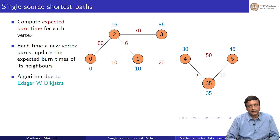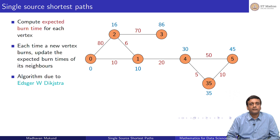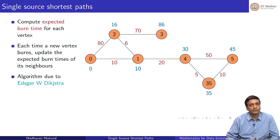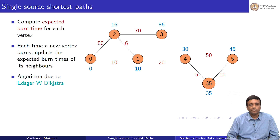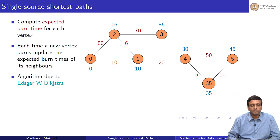This is the algorithm. Although we have described it picturesquely in terms of burning vertices, you can keep track of all this information in a matrix, keep track of what is burnt, keep updating the time to burn by looking at the edges in the graph and finding the neighbors and expected burning times. This algorithm is very well known — it is due to Edgar Dijkstra. This is called Dijkstra's algorithm for the single source shortest path.